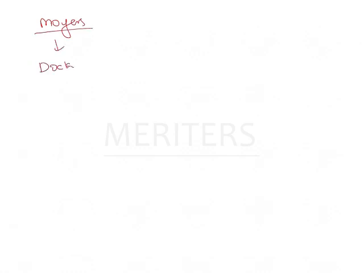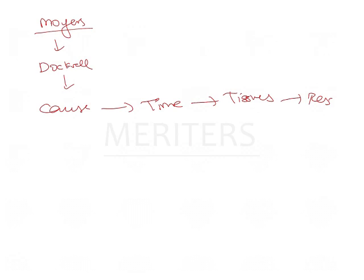From the remaining options — Moyers, Graebers, and Weitengardners — how have they classified the etiology? Moyers based his classification on the Dockerell equation, which states that a particular cause acts at a particular time on some tissues to produce a result. Moyers has broadly classified these causes as seven factors.